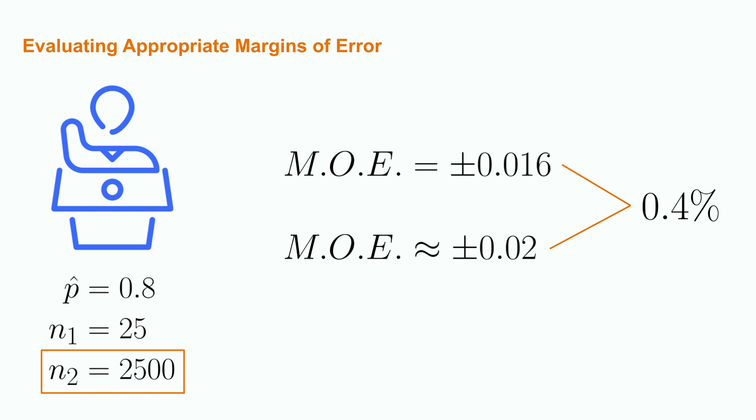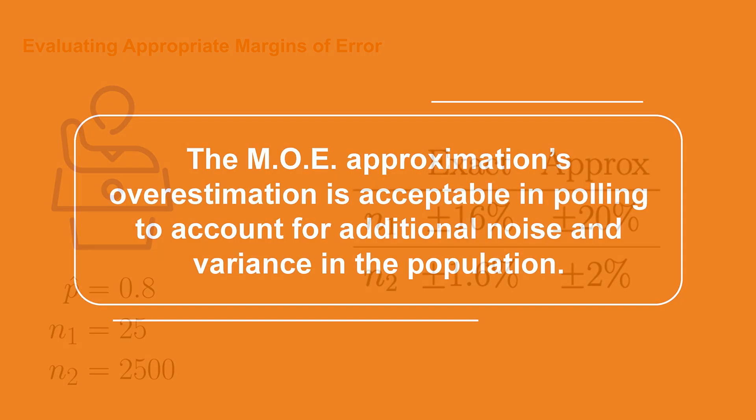Let's tabulate the results together. So in both cases, we find that the exact margin of error is narrower. Still, with a large enough sample size, even though we are far from 50-50, the approximation is still within 0.4% of the exact result. The approximation, however, as it was demonstrated in the graphs, is always going to be greater than the exact value, so they only match exactly at 50-50. The approximation overestimation, however, is acceptable for most polling applications, as it is frequently good to overestimate the noise and potential variance in the polled population.